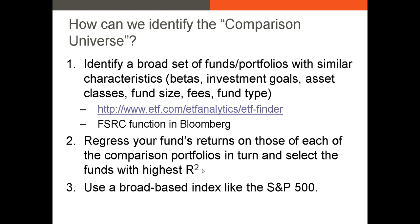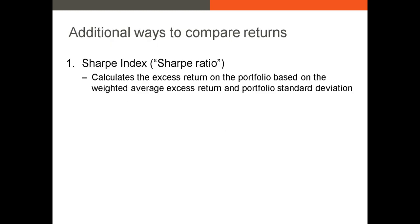Finally, if our IPS restricts us to only long positions in an asset class like US equity, we could choose to compare our performance to that of a very broad-based index like the S&P 500 or the NASDAQ composite. If you remember, the benchmark for Ball State Smith is the S&P 500 index. This was initially set because it's the best representative of our investable universe.